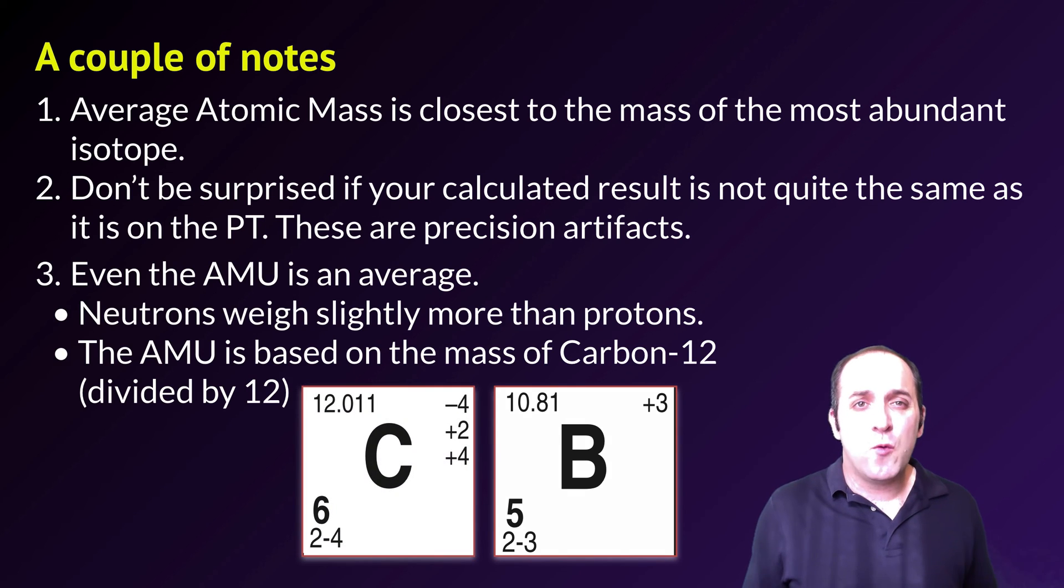And finally, you should be aware that even the atomic mass unit itself is an average. So neutrons actually weigh slightly more than protons do. And the way that the atomic mass unit was initially set up was that the mass of carbon-12 was taken to be the perfect mass. So they took carbon-12 and made its mass equal to 12.0000 forever atomic mass units. They divided that by 12 and they called each of those an atomic mass unit. In reality, a little bit more of that mass is comprised of neutrons than protons, but you do not need to worry about that at the level of this course.